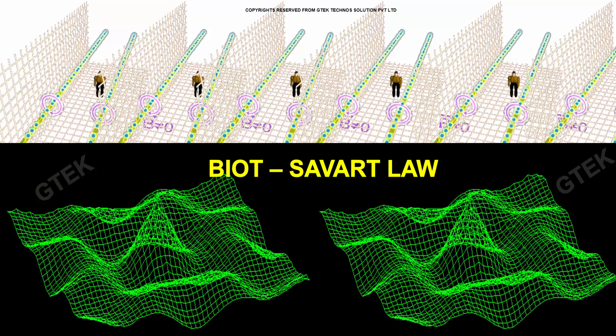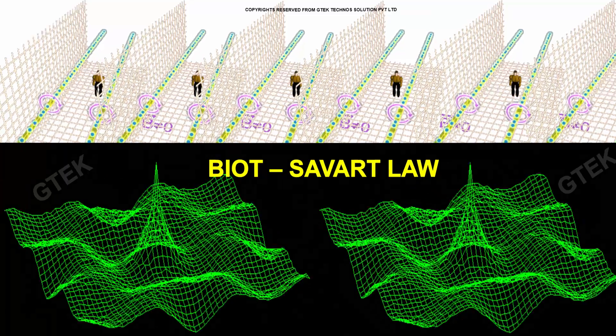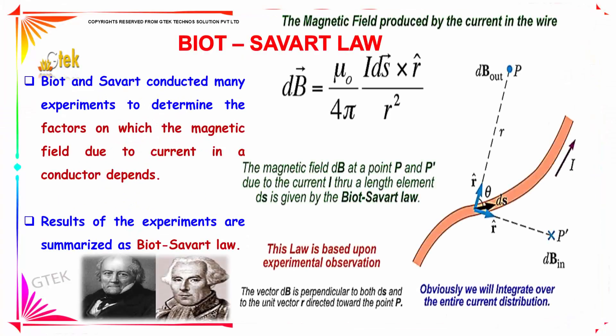Let's talk about Biot-Savart law. Biot and Savart conducted many experiments to determine the factors on which the magnetic field due to the current in the conductor depends. The magnetic field dB at a point P and P' due to the current I through a small element ds of the conductor is given by Biot-Savart law.